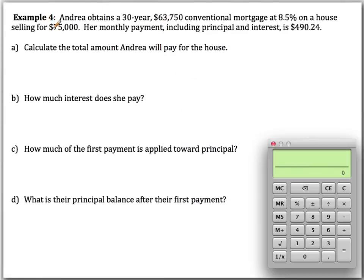In the next example, we want to talk about how much we actually pay for the house — how much is interest, how much goes to principal, and how much is left after the first payment. Andrea obtains a 30-year, $63,750 conventional mortgage at 8.5% on a house selling for $75,000. Her monthly payment, including principal and interest, is $490.24.